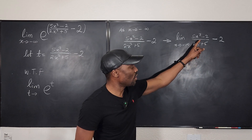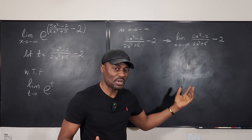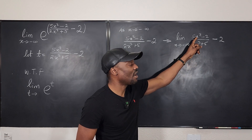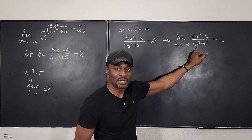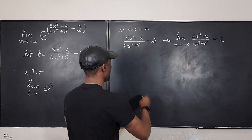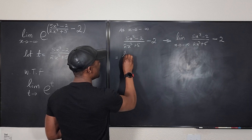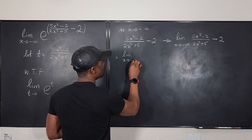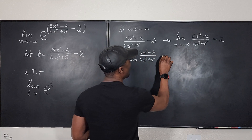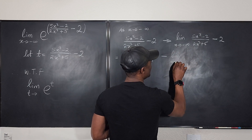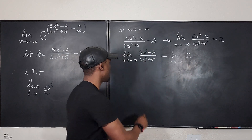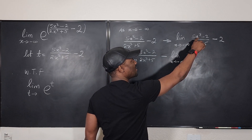Look at the denominator and ask: what term has the highest degree? The degree of this polynomial is 2, so you're going to divide everything top and bottom by x². We can also break this limit: it equals the limit as x goes to negative infinity of (5x² minus 2) over (2x² plus 5), minus the limit as x goes to negative infinity of just 2. We know the constant stays constant, so let's divide top and bottom by x².